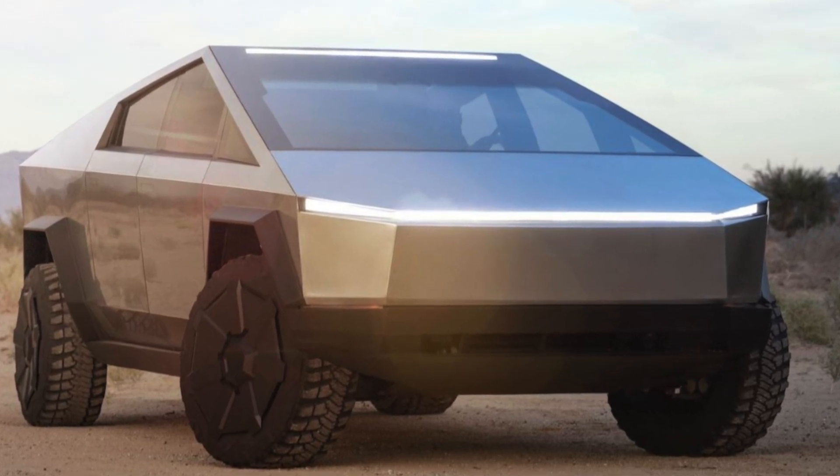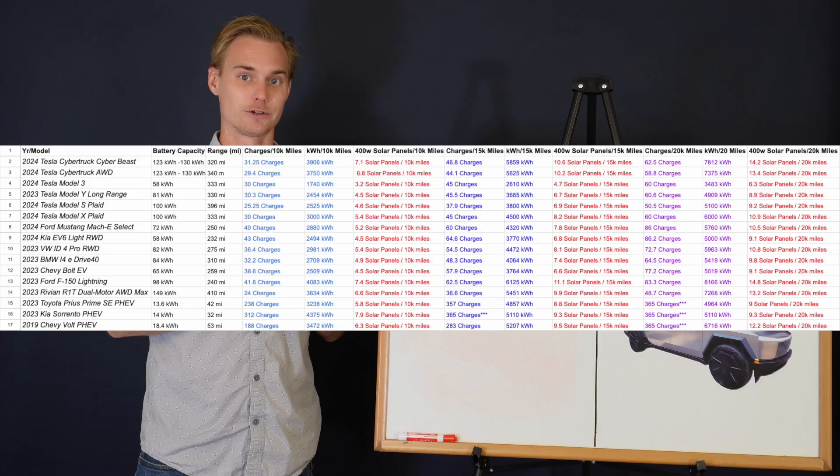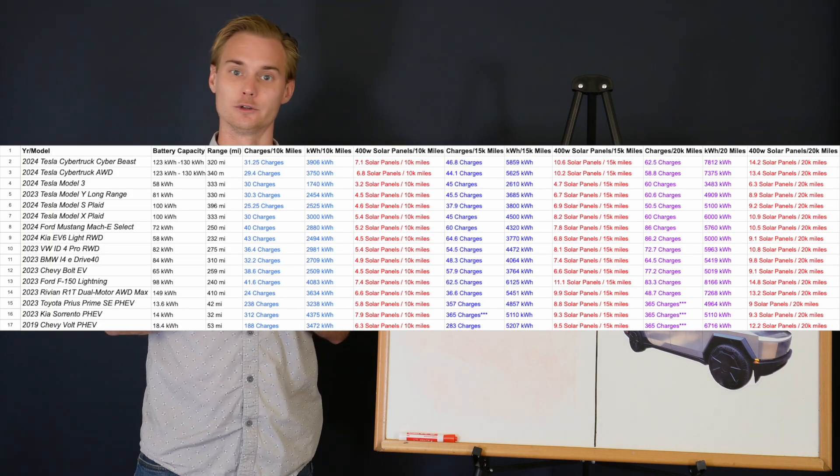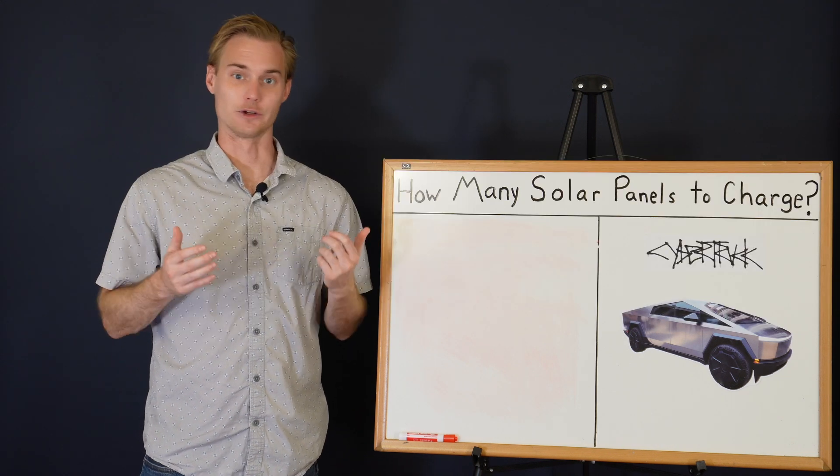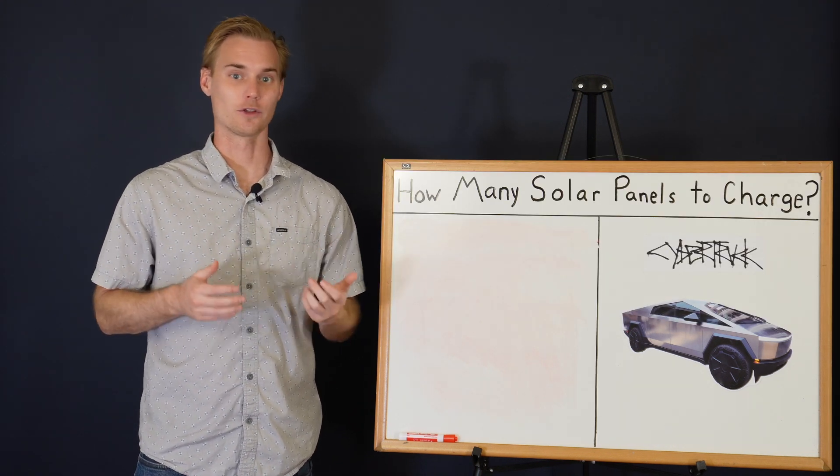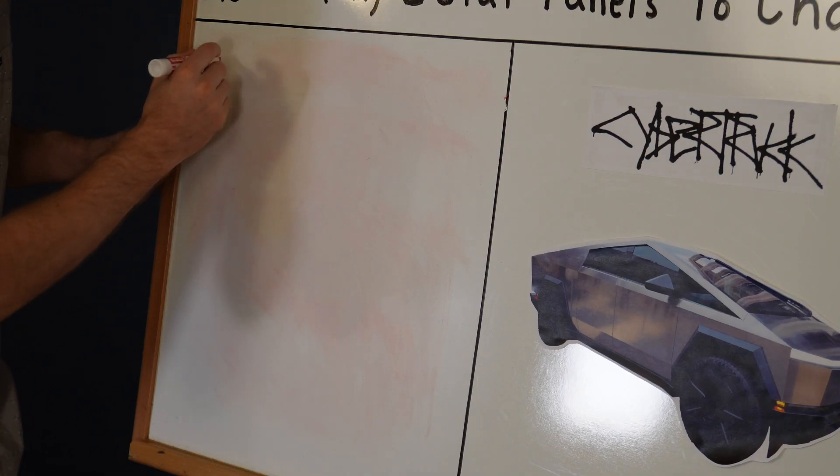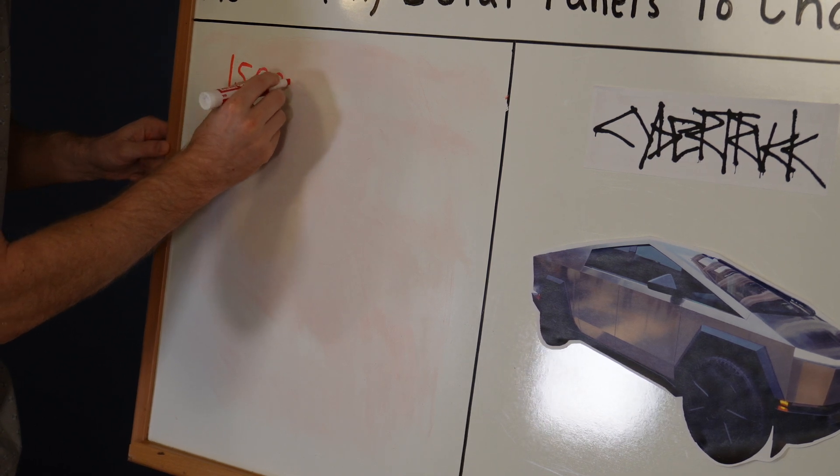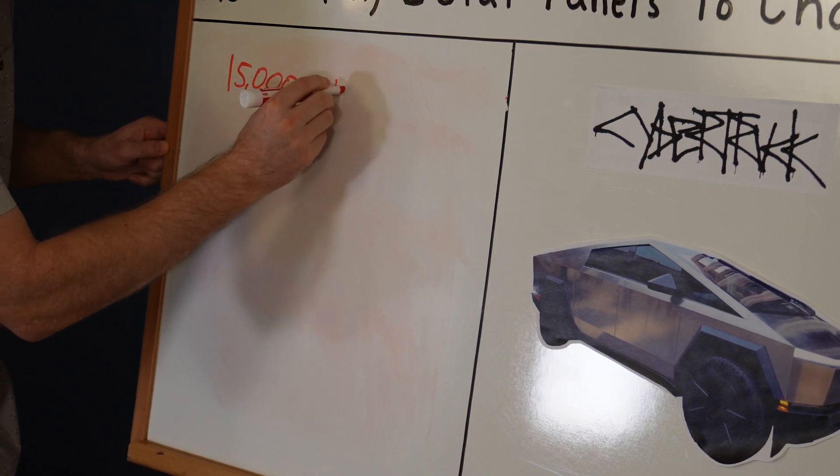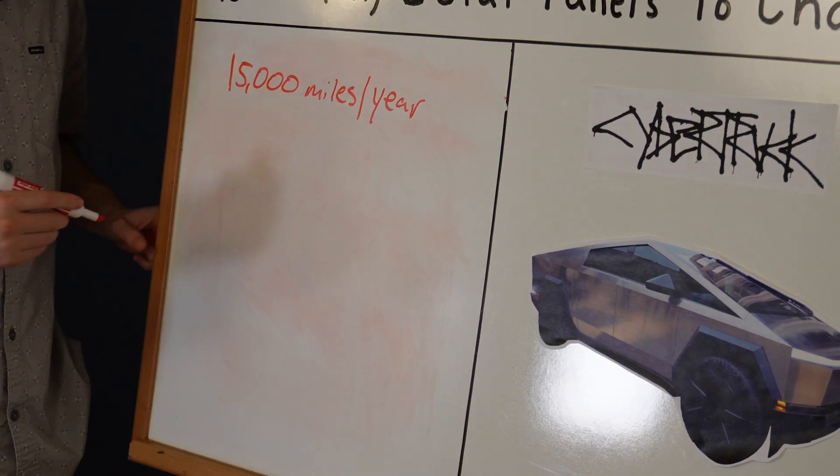Before we get started, let's go over how many kilowatt hours the truck is going to require to drive a certain amount of distance. The average person in the United States drives somewhere in the range of 10 to 15,000 miles per year, so we're going to assume that you're driving 15,000 miles per year.